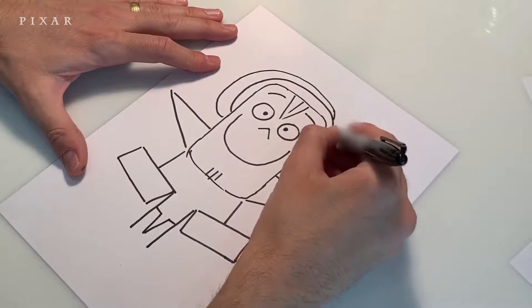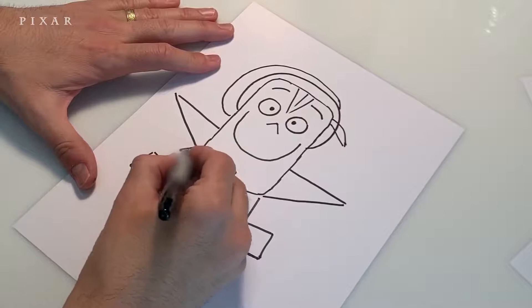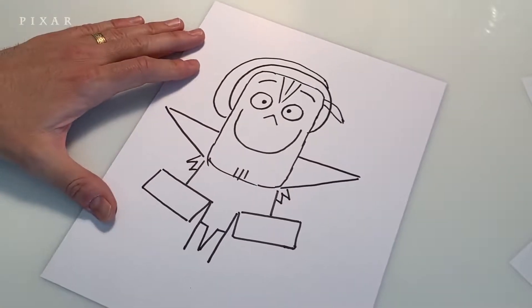And now let's do a couple little details. Let's add a little sprig of hair coming out there, and then a little hair in the back, do a couple little W's right there. And there you go, you have drawn Barley.